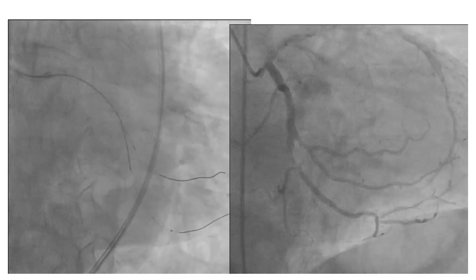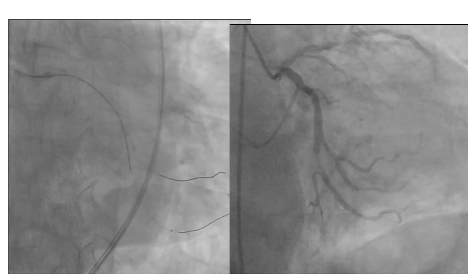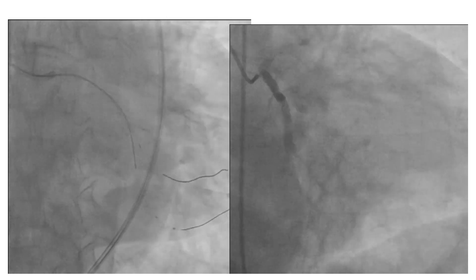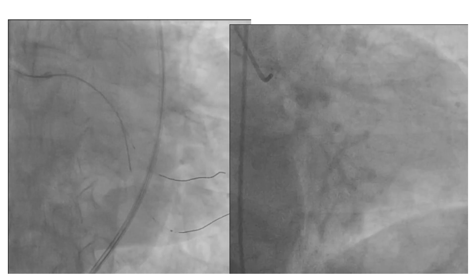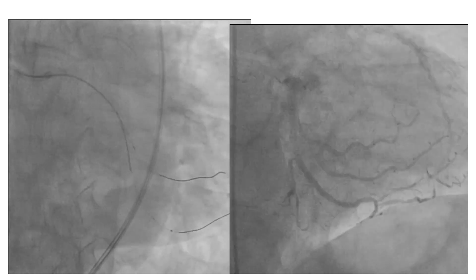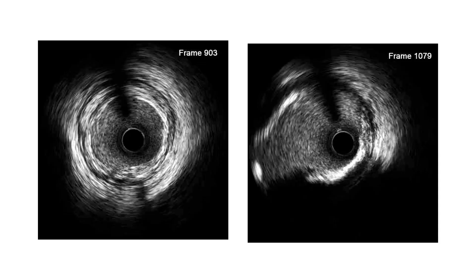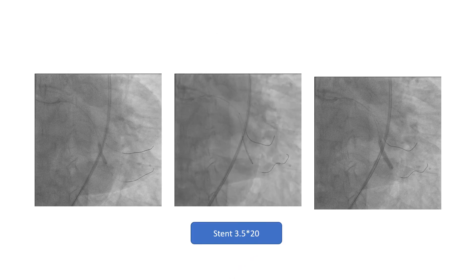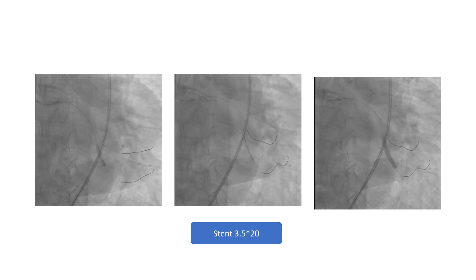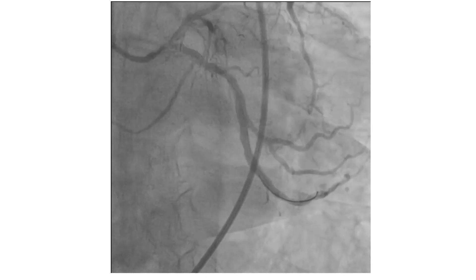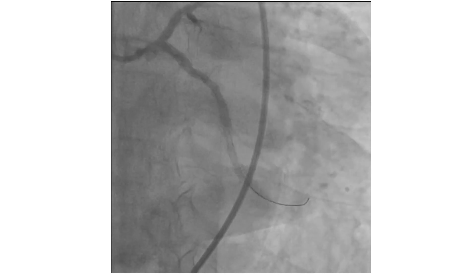We then engaged the left system and wired the circumflex again with the diagnostic angiogram as a roadmap. IVUS was done, using two landmarks: a second wire placed in a large branch of the OM to avoid stenting at the bifurcation, and the IVUS catheter dot itself. We confirmed a good landing zone distal to the bifurcation. The artery was prepared, predilated, and stented using a 3.5 by 20mm stent, dilated with an NC balloon inflated up to 18 atmospheres. The mid-circumflex lesion was non-critical by IVUS.